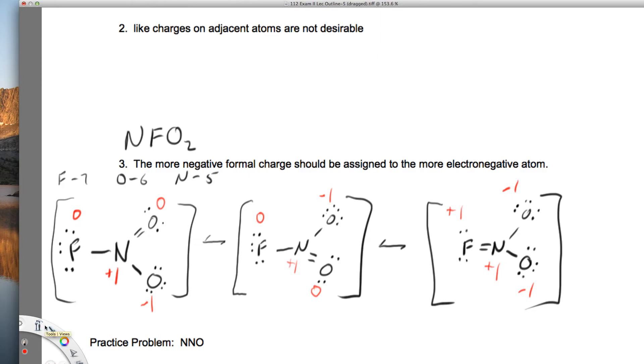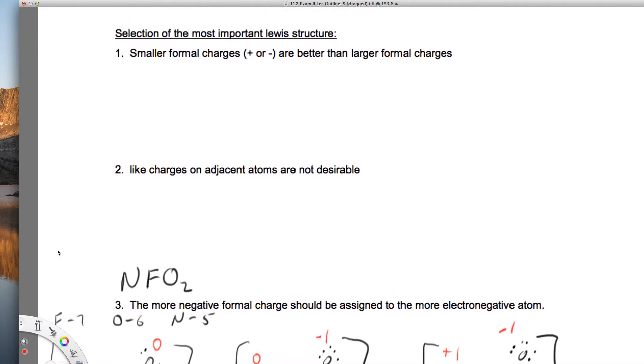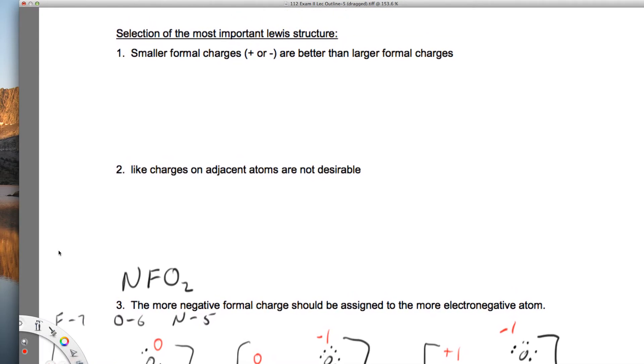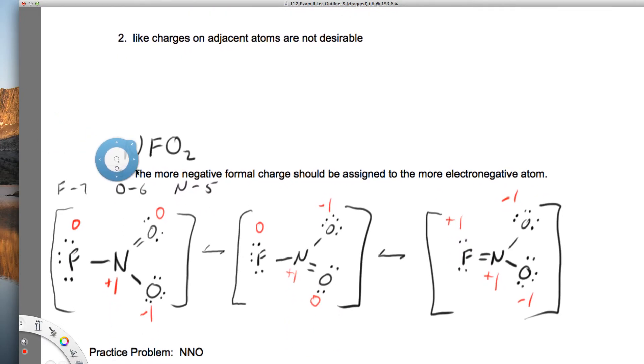Let's take a look at those. First, smaller formal charges are better than larger ones. Like charges on adjacent atoms are not desirable. If we look at this structure right here, we see negative one on adjacent atoms and plus one on adjacent atoms. Here, we don't see any like formal charge on atoms that are next to each other. That is a negative for this third structure.